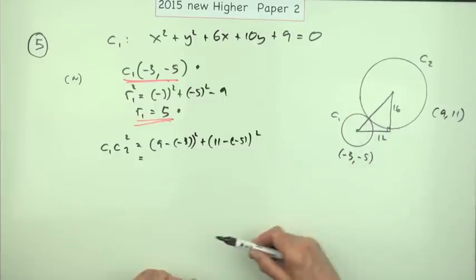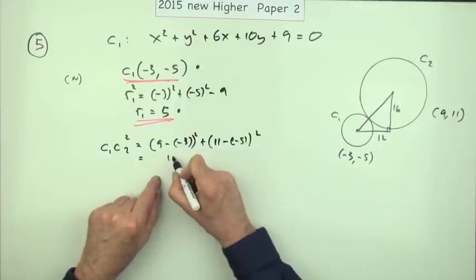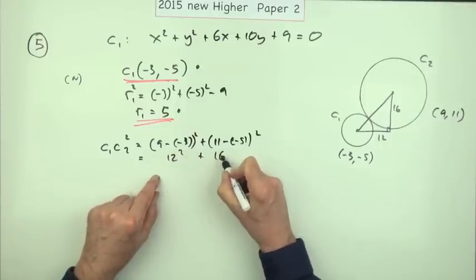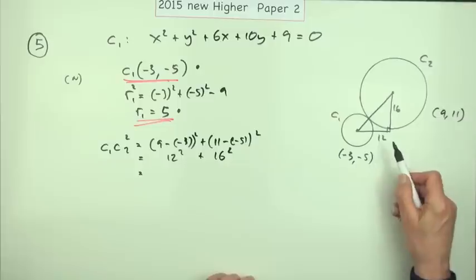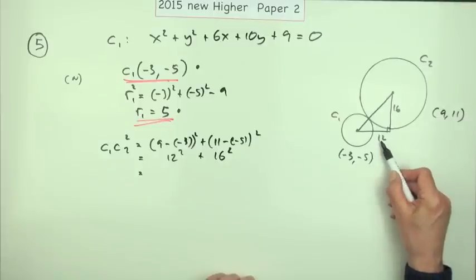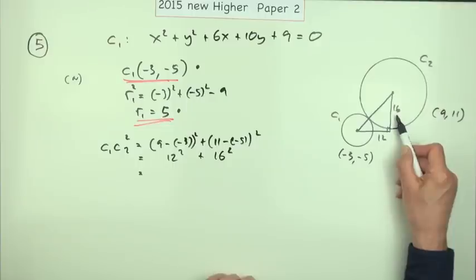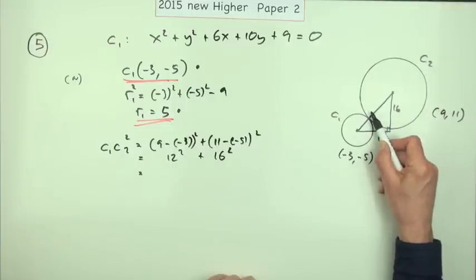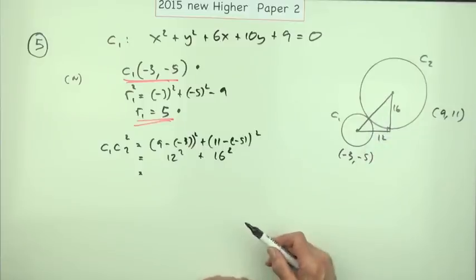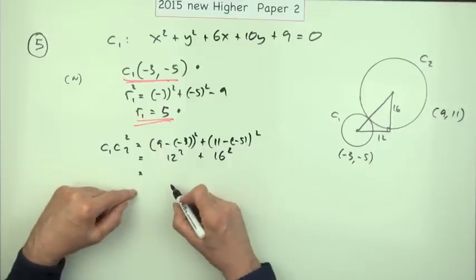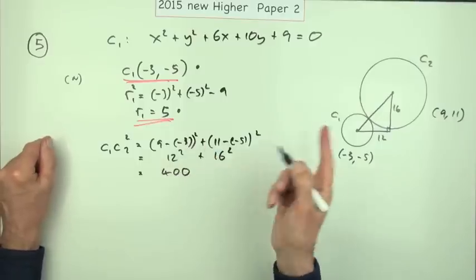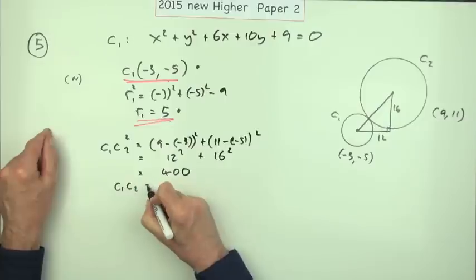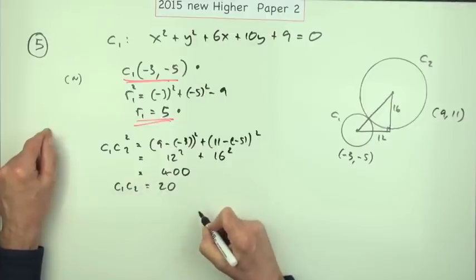That little triangle is going to be very handy for other things. Well that's 12 squared, that's 16 squared, or you may just say that's four times three, that's four times four, so that must be four times five, so the answer is 20 because you've got a three-four-five triangle. Maybe I should just have done that. So that would be 400, so c1 c2 is going to be the square root of that which is 20.